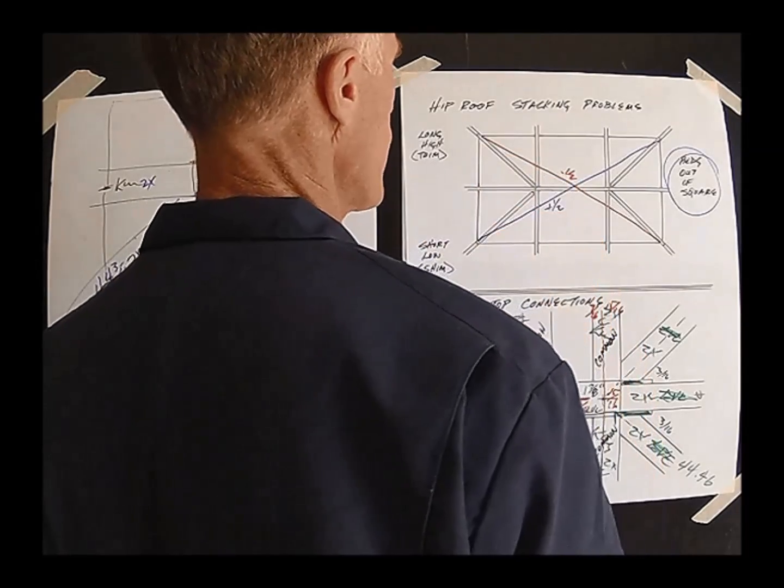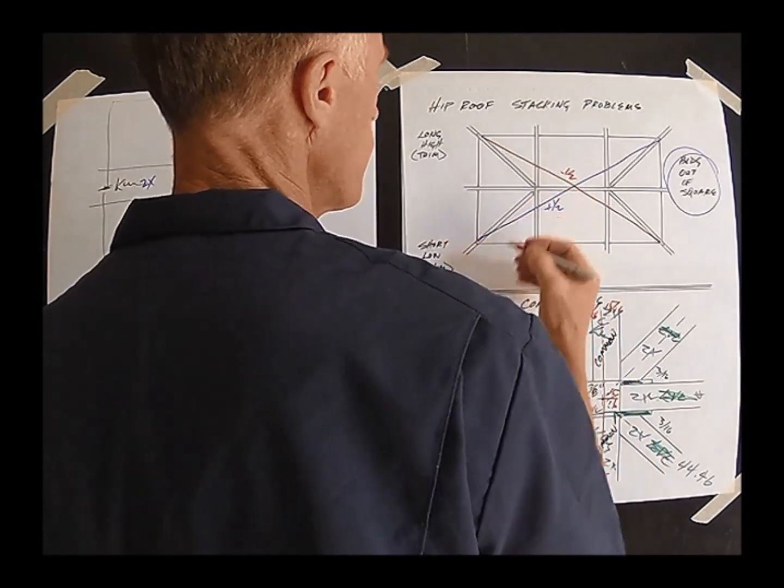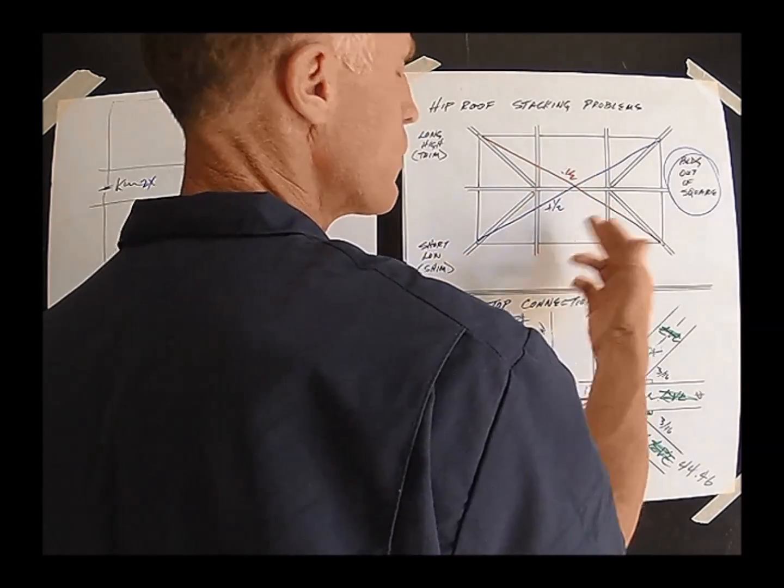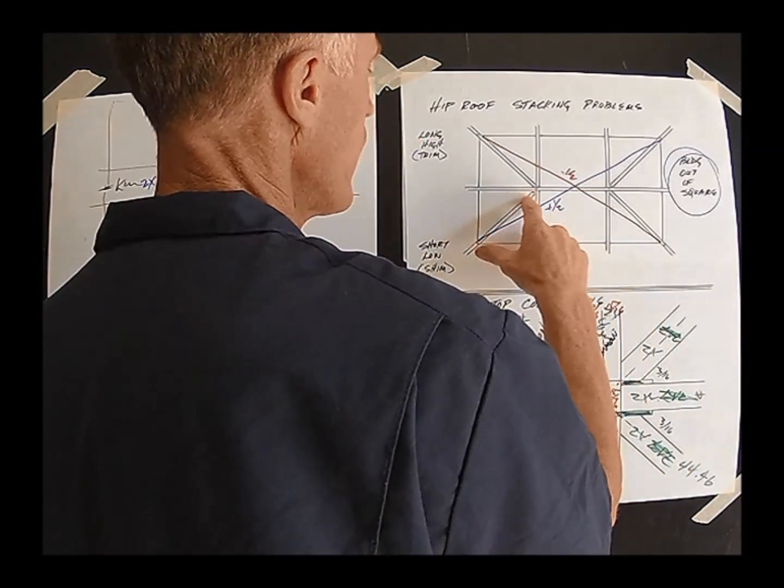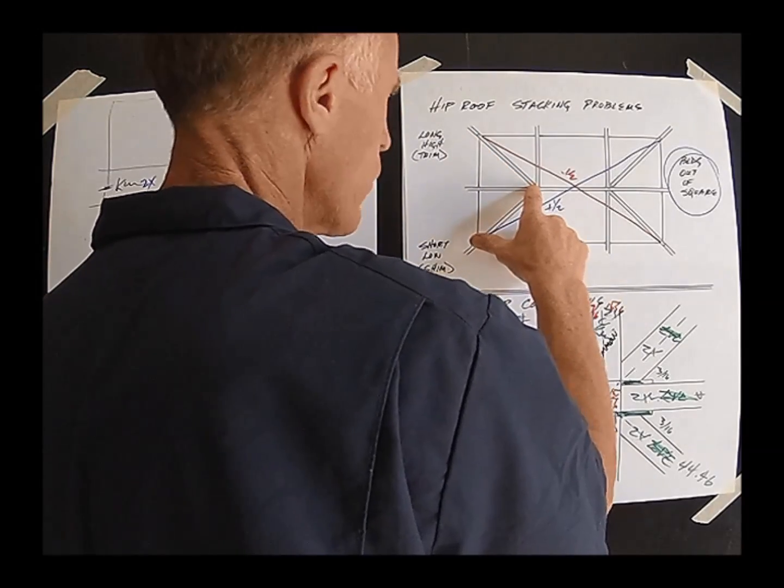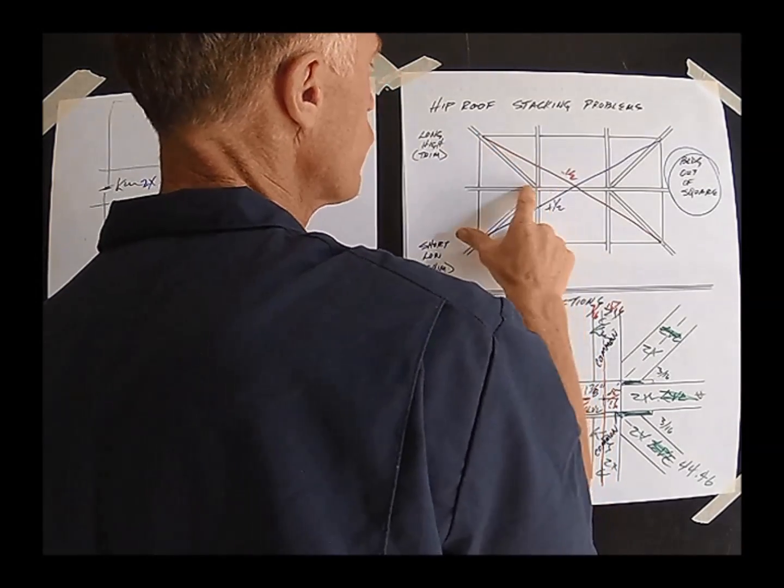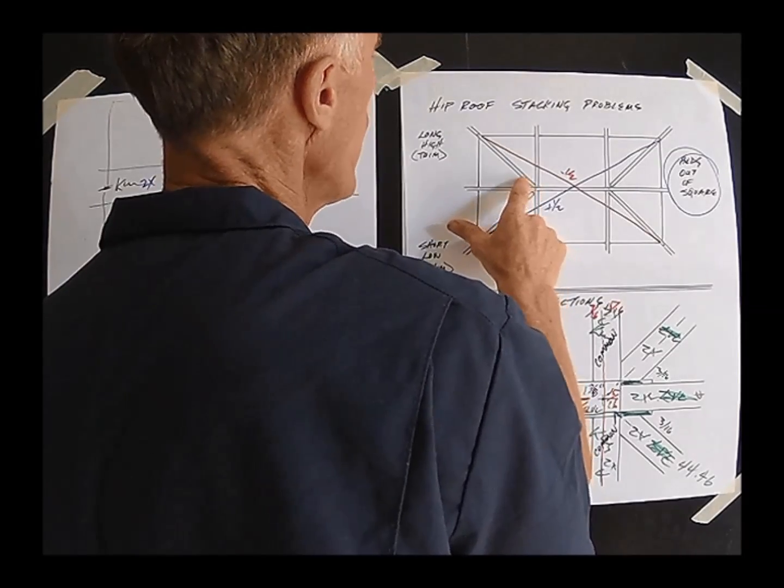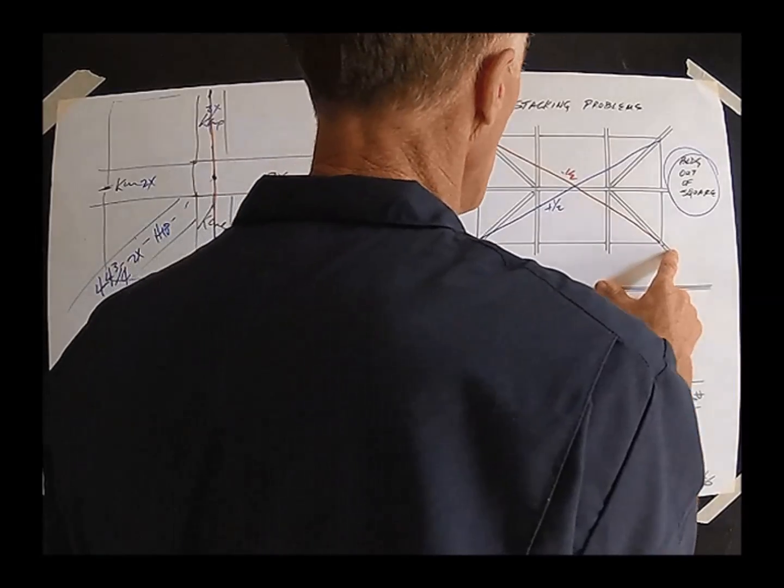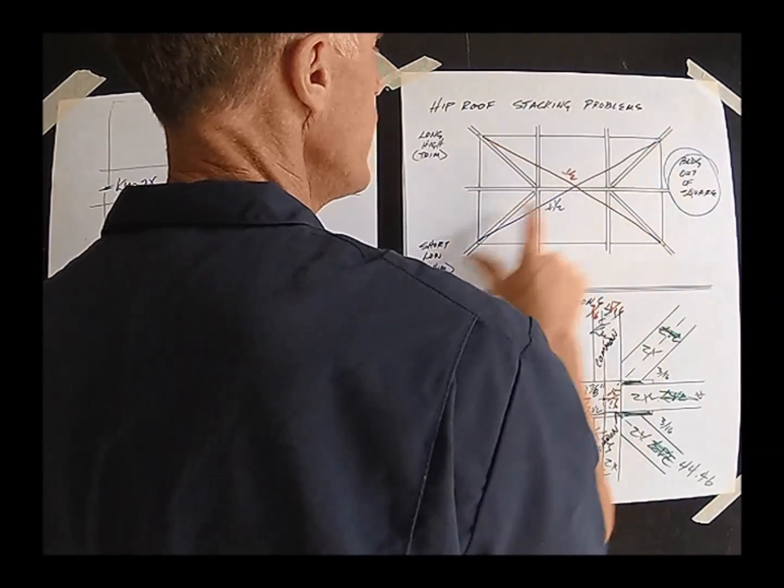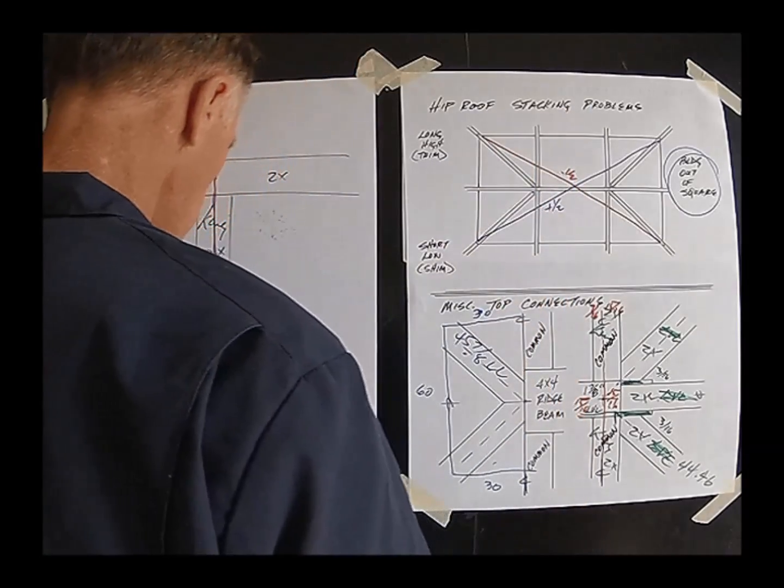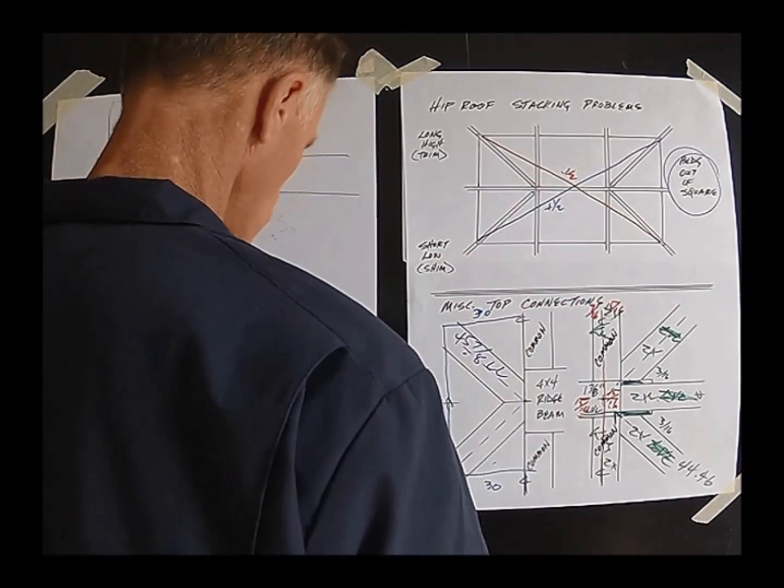So if when you cut these guys, these two hips, to their lengths using your 60 inch span, we're going to find out that these guys will be short - correction - these guys in the short distance will be too long and that'll actually push that bird's mouth out on this one and this one. And when you put these two in, they'll fall down at the head cut, will fall down at the ridge because it's too short.